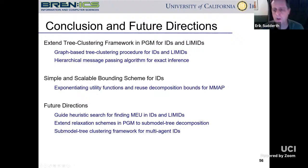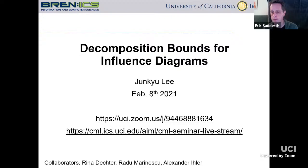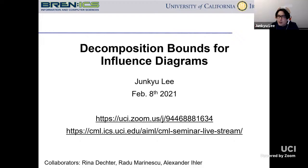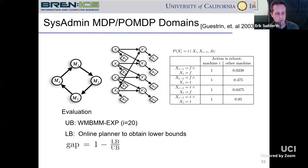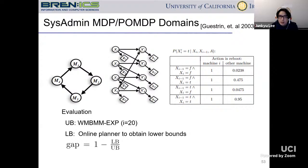Audience question: A lot of your examples were MDPs and POMDPs, and of course in that space there's a whole lot of specialized work and algorithms just thinking about MDPs and POMDPs. In that last example, the thing you called the lower bound — would that look like a state-of-the-art method in that space? I'm trying to understand how this would relate to the more specialized POMDP literature.